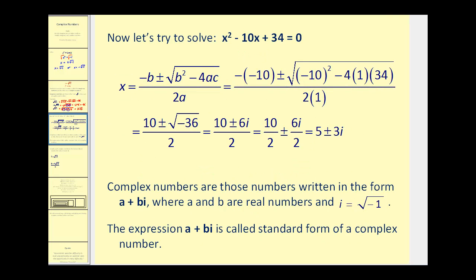Now if we tried to solve the equation x squared minus 10x plus 34 equals 0, that also doesn't factor, so we would apply the quadratic formula. What's new here is that when we simplify the discriminant, we end up getting the square root of negative 36, which leads to part of the answer being imaginary. So we have 10 plus or minus 6i, all divided by 2. Dividing both terms in the numerator by 2, we have 5 plus 3i. So there is an imaginary number as part of this solution, but there's also a real part.